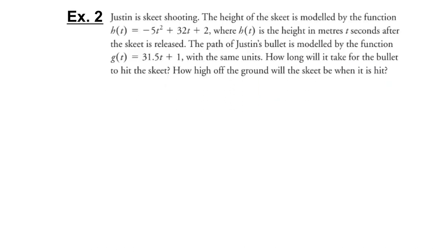Let's look at a word problem. Justin is skeet shooting. Skeet shooting is when a clay disc is shot into the air and you do target practice on it with a rifle. The height of the skeet is modeled by h(t) equals negative 5t squared plus 32t plus 2, where h(t) is the height in meters t seconds after the skeet is released.